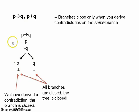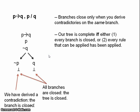So, our tree, this tree, is now complete. There are two conditions under which a tree is complete. Either every branch has been closed, or we've applied every possible rule. In our case, it's both.